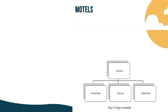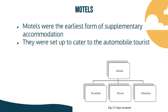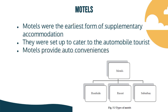The first one is the motel. Motels were the earliest form of supplementary accommodation. They were set up to cater to automobile tourists and provide auto conveniences. Going back to past subjects, it has been recognized that the concept of the motel originated in the USA. The motel was meant for local motorists — also called a motorist hotel.